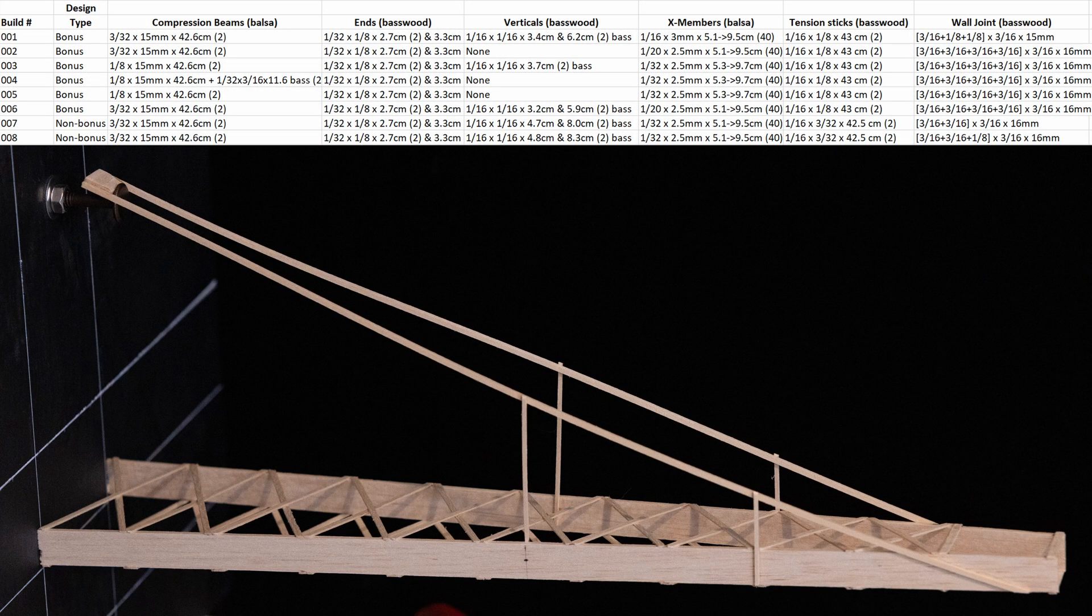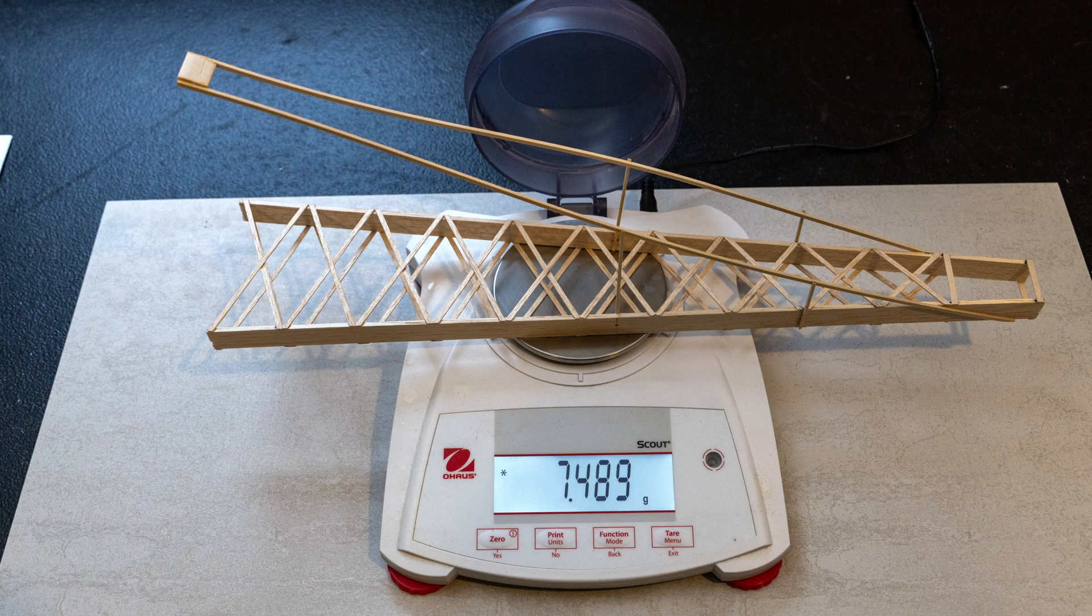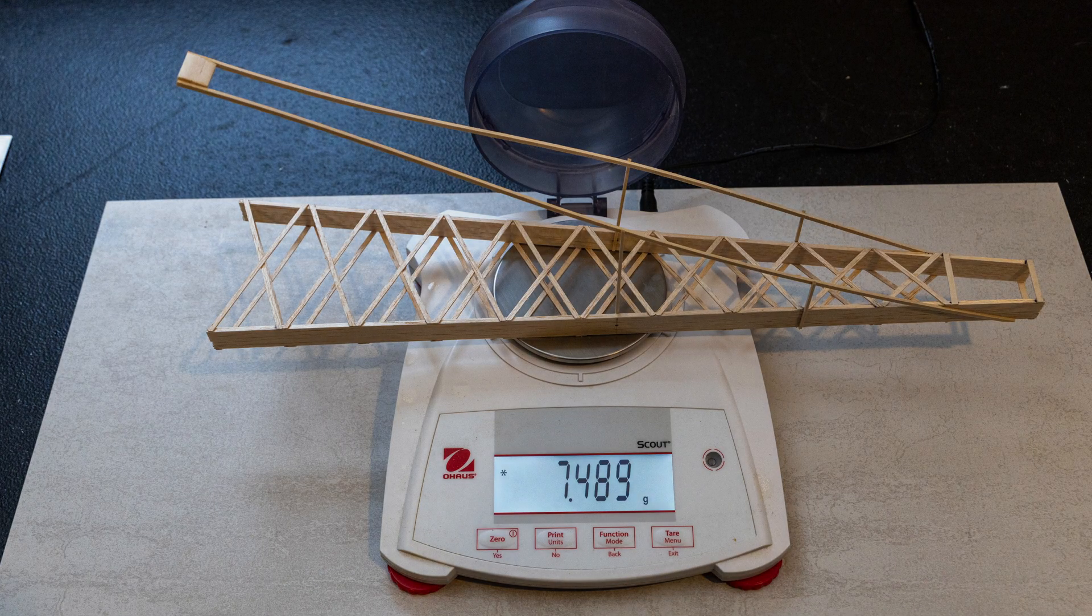Here is my second non-bonus build, and using the information from the previous failure I have increased the length of the wall joint by adding an additional 1/8 by 3/16th inch piece of basswood. You can see that the joint mass increased a bit, but I also lowered the mass of the beams by about 10% to 2.171 grams. The cross members and tension sticks increased, but not really on purpose. Here is the build right before testing at 7.489 grams.